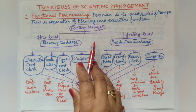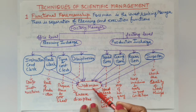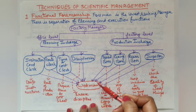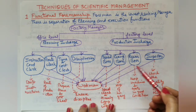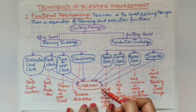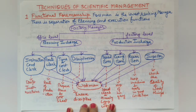So the factory manager of the production department has eight people to oversee workers. This conflicts with Henry Fayol's principle of Unity of Command — which says one person should receive orders from only one boss — since here a worker has eight bosses. However, with functional foremanship, the speed of production increases and time wastage decreases, improving the overall business.